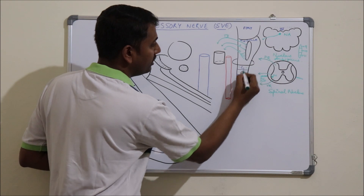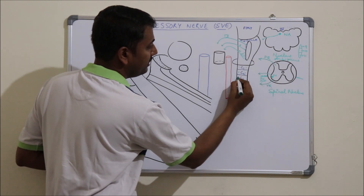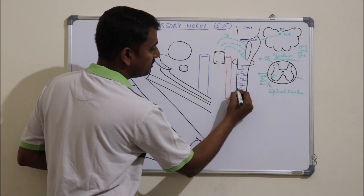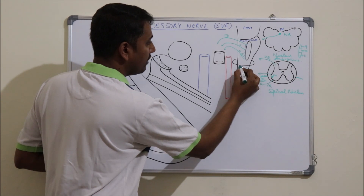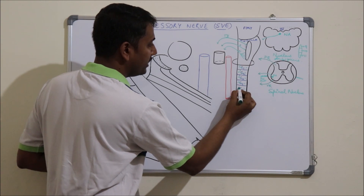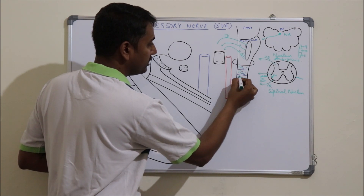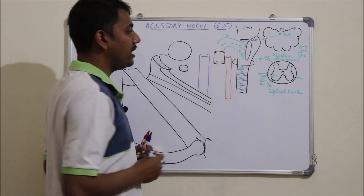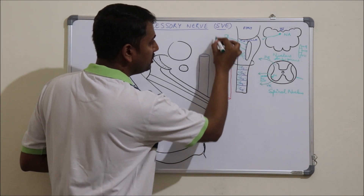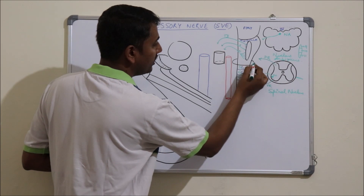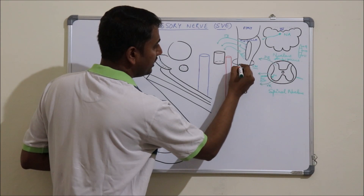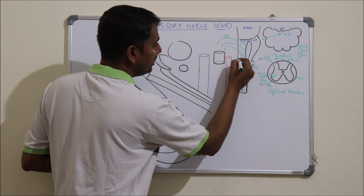The dorsal and ventral roots of each cervical segment from C1 to C5 are identified. From each segment arises a filament of the spinal part. These filaments ascend together and join to form the spinal part of the accessory nerve. This spinal part enters the posterior cranial fossa through the foramen magnum.